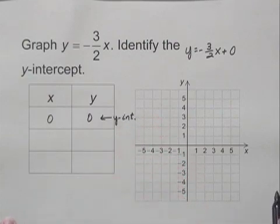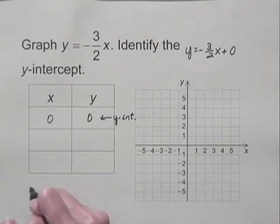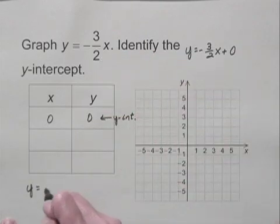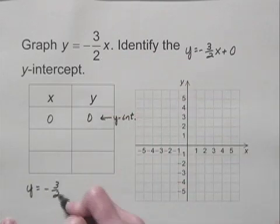Now let's find two other points on the line, and then we can draw the graph. Let's let x be negative 2. I'm choosing multiples of 2 because I have a fraction here, and so it will simplify nicely when I make the substitution.